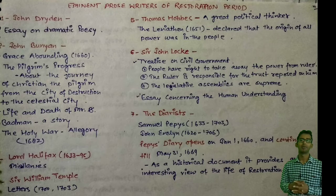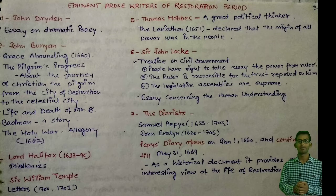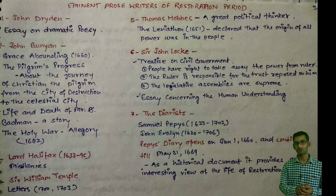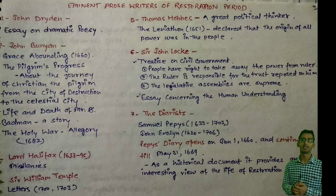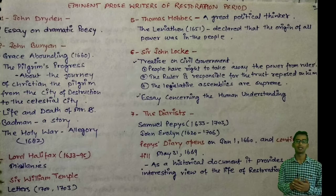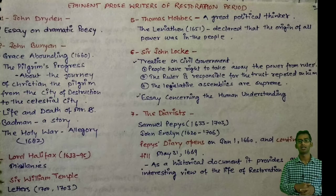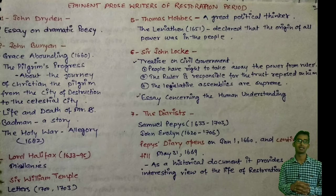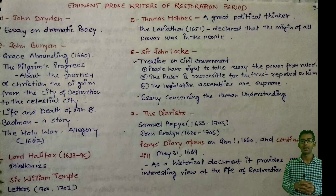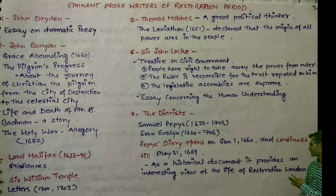The diarists of the period are Samuel Pepys, from 1633 to 1703, and John Evelyn, 1620 to 1706. It is important to remember these dates. As you can see in the notes, Pepys's diary opens on 1st January 1660, continues from January 1664, and continues till May 31, 1669.